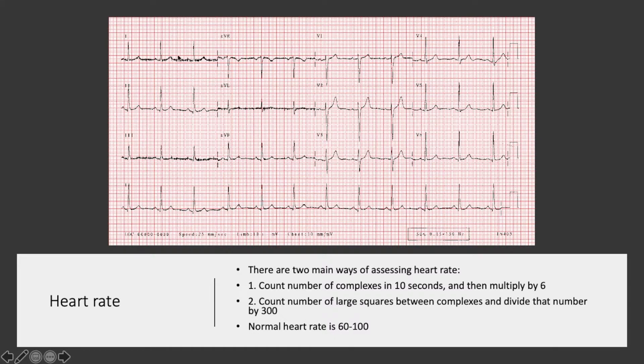If you look at the ECG strip you can see that there's a bunch of different numbers and letters across it — for example we've got 1, 2, 3, V1, V2, V3.